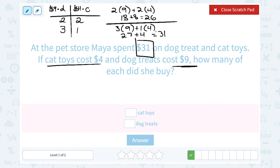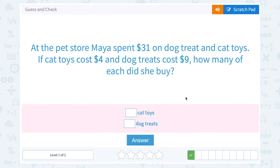So notice when we're doing guess and check, after we make our first guess, we're adjusting it based on our answer. Since 26 was a little too small, it was smaller than 31, I increased my number of dog treats. So our answer was three dog treats and one cat toy.